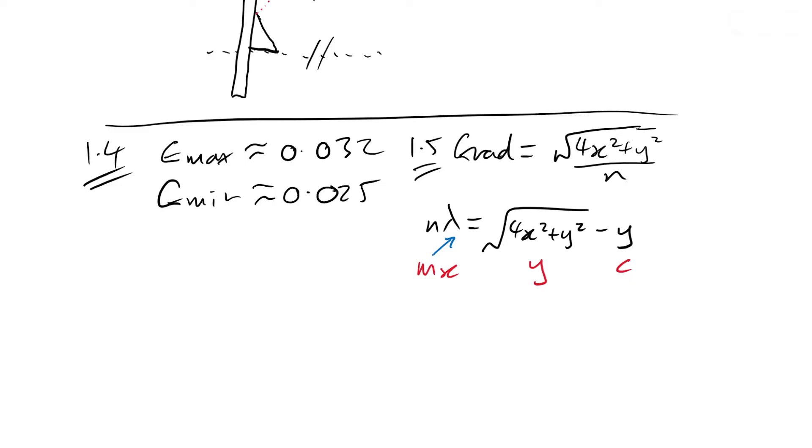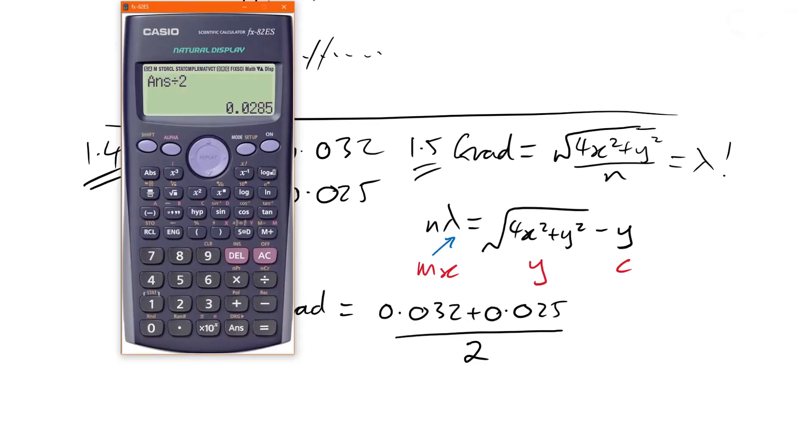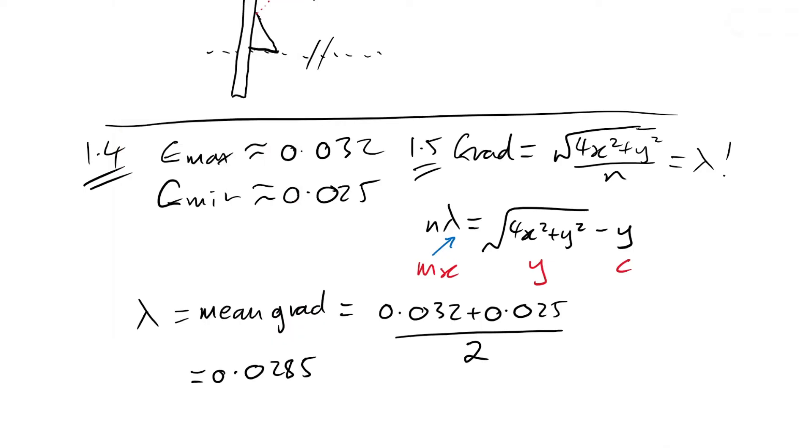So lambda is going to be equal to the mean gradient. We just have to do an average of our two values. That gives us 0.0285. However, because we're in paper three, we need to be especially careful when it comes to number of sig figs. We can see on the y-axis we have four sig figs, on the x-axis we have two sig figs, so we need to give our answer to two sig figs: 0.029.